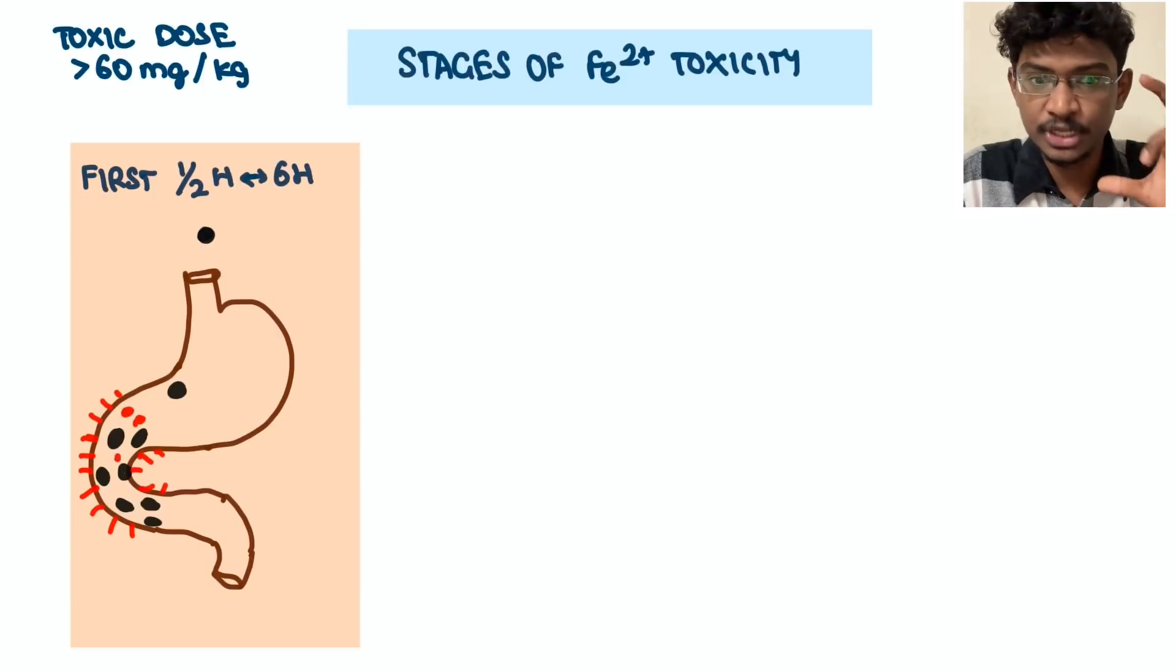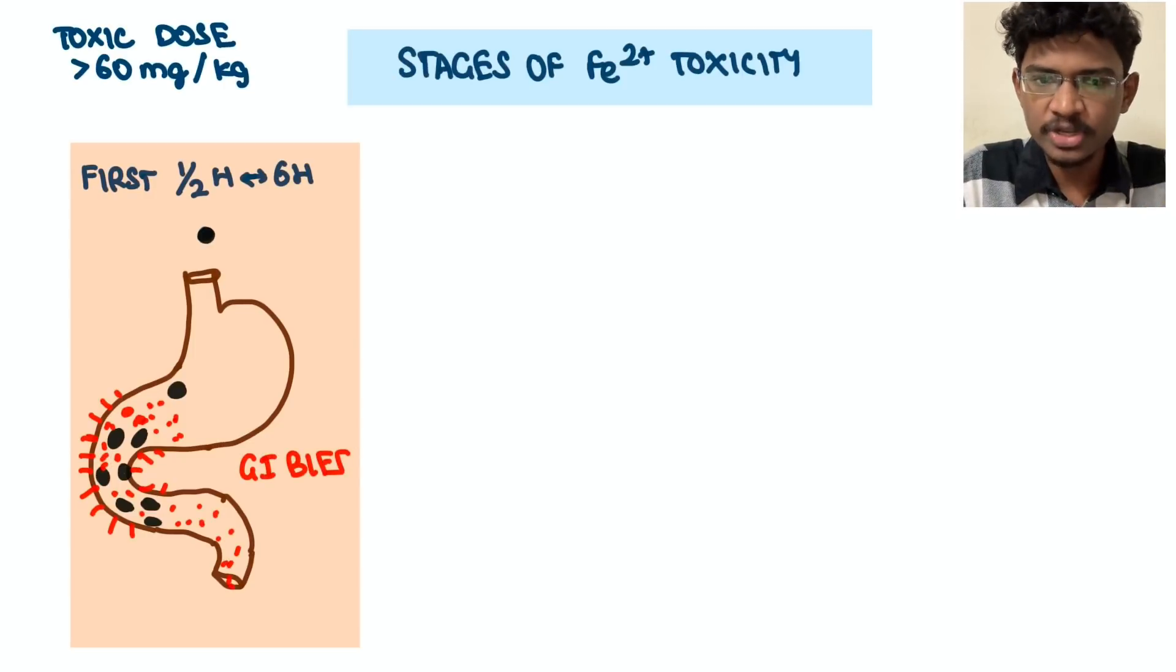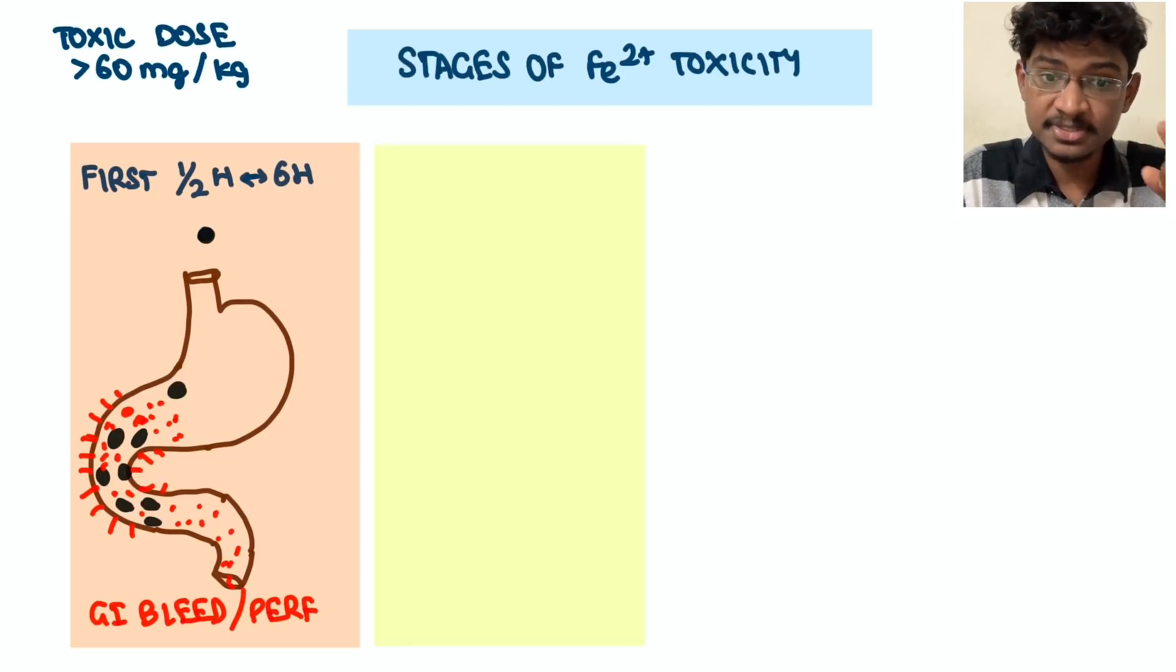First 30 minutes to 6 hours: whatever iron tablets which they have ingested, the site of iron absorption is duodenum as well as the terminal part of stomach. There it will go and these iron tablets will irritate the stomach and duodenum causing bleeding, GI bleed, sometimes perforation, or due to that much gastritis the patient will be continuously having vomiting leading to development of hypovolemia and hypovolemic shock in this region.